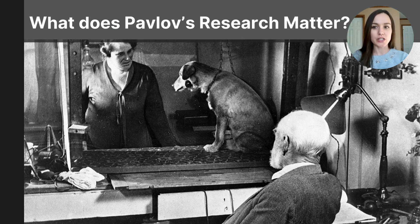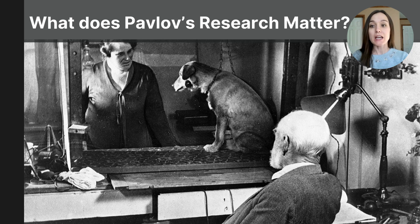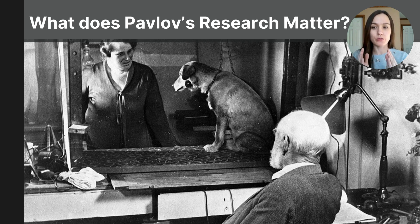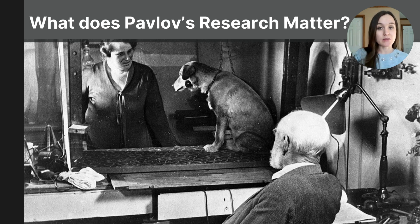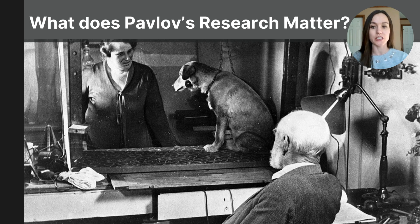Classical conditioning is one way that virtually all organisms can learn to adapt to their environment. It's really important to know that Ivan Pavlov demonstrated that learning could be studied objectively through visible and measurable changes in behavior. Today's video will focus on additional research that has built upon Pavlov's discovery, as well as how we can apply these findings to the real world.